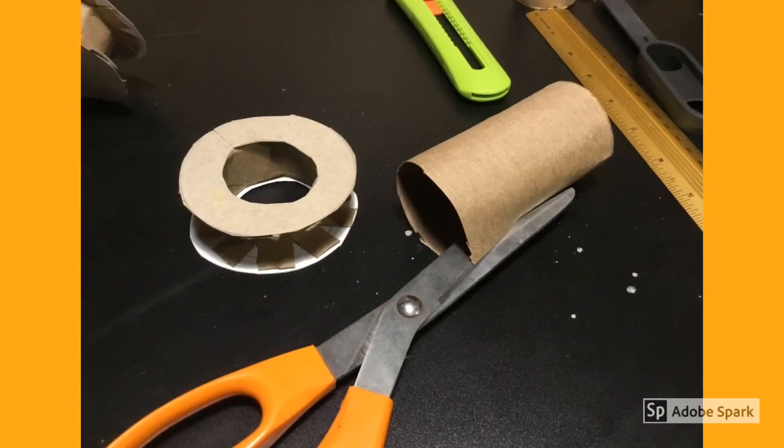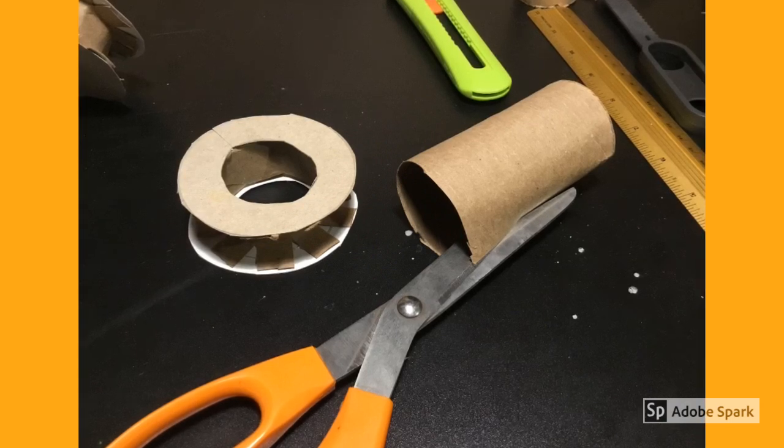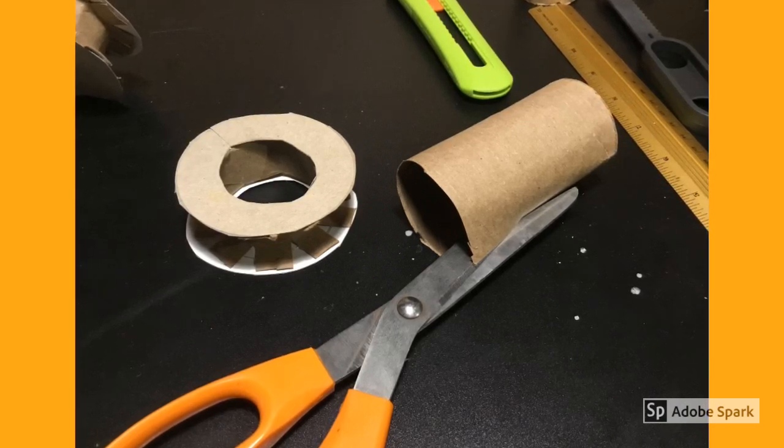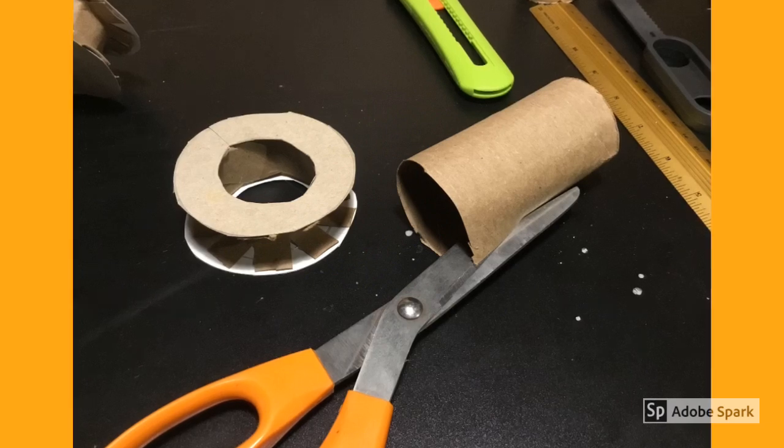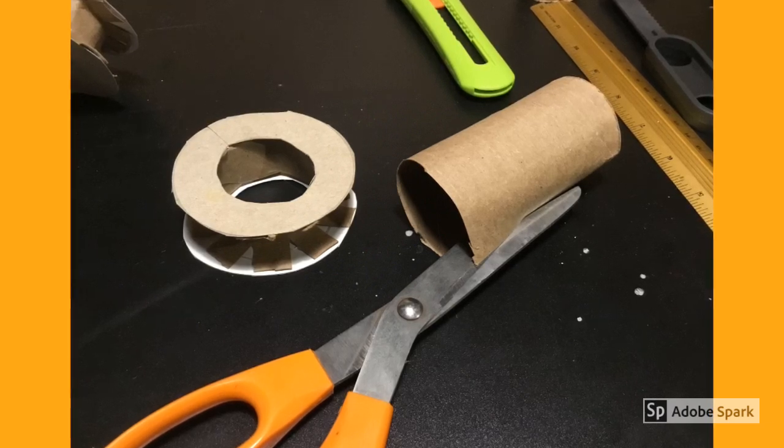Now that we've created the rimmed wheel or pulley, we need to create the axle that it will rotate on. Take one of the 10 centimeter cylinders you created earlier, and make a cut all the way up one side.